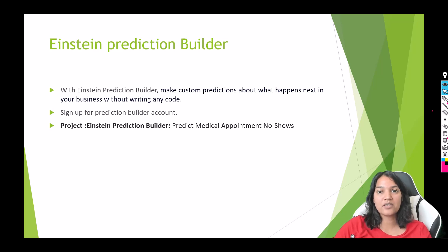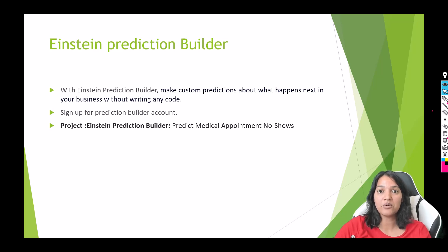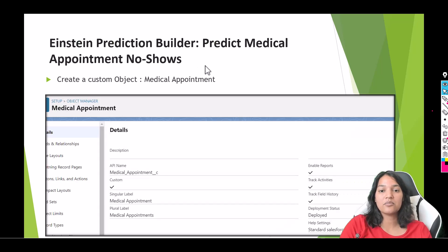The first thing we're going to do is sign up for our Einstein Prediction Builder account. We are going to use a different link, not the one we were using for creating a developer's account, because in that developer's account Einstein Prediction Builder is not enabled. So we need an account where it is enabled.